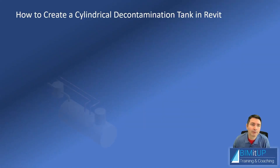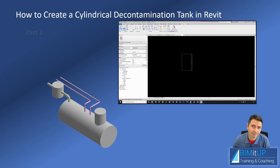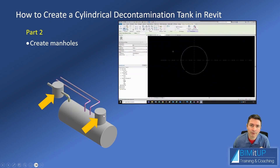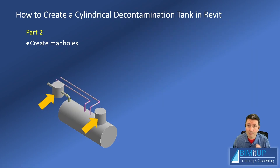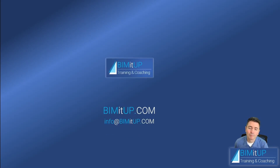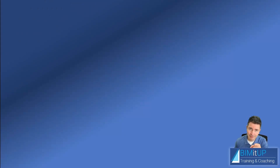Hi everyone, Alex here. Today I'm going to continue showing you how to create a cylindrical decontamination tank in Revit. This is part two, which focuses on creating the manhole — you'll have one manhole for sensing and another for the motorized valve. I remind you that if you just want to download the family, you can scan the QR code on screen. This is Alex with BIM It Up, where we help you with professional training and coaching in MEP, fire protection systems, and Autodesk platforms like Revit and AutoCAD.